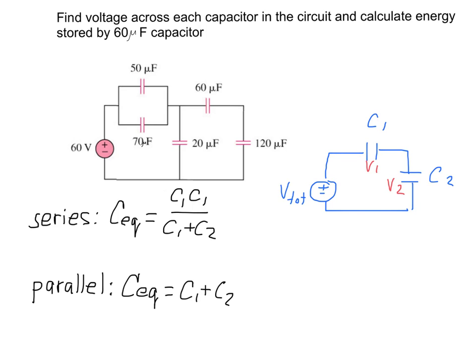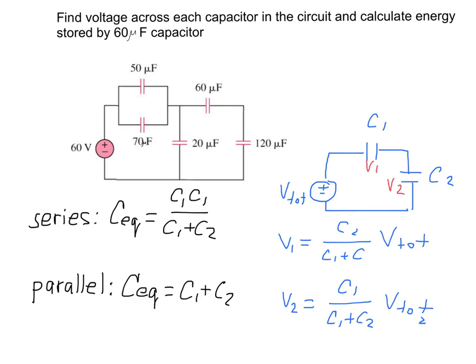The next idea is how to find the voltage across each capacitor when two capacitors are connected in series sharing a total voltage. We'll use the capacitive voltage divider. The voltage across the first capacitor is V1 = (C2 / (C1 + C2)) × V_total, and the voltage across the second capacitor is V2 = (C1 / (C1 + C2)) × V_total. Note that the opposite capacitance goes on top.